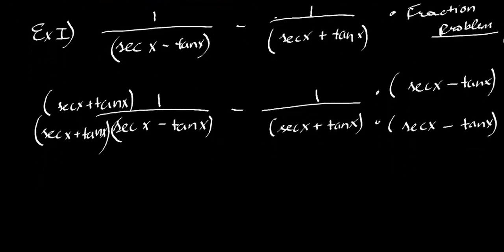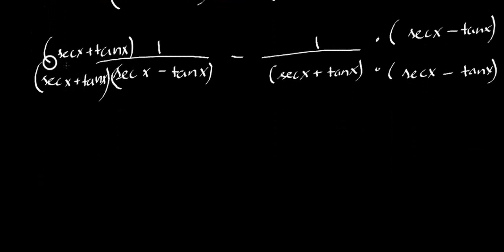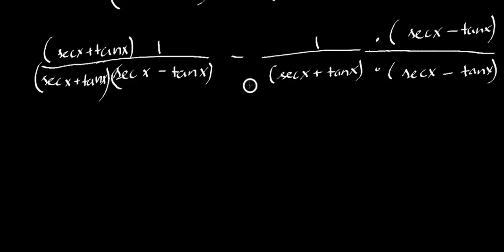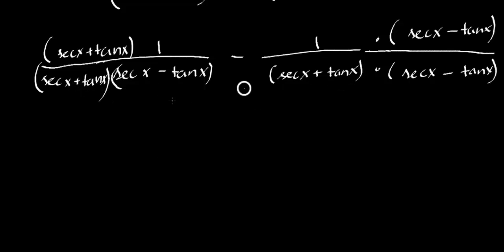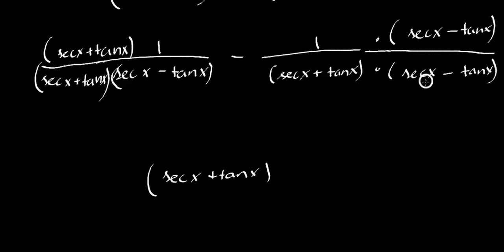Let's do the simplification quickly. Looking at our denominator: we have the same two pieces in each fraction's denominator. We have secant x plus tan x on each side, so we can just take one. And we have secant x minus tan x here as well, so we can just take one. Secant x minus tan x — this is our new denominator.